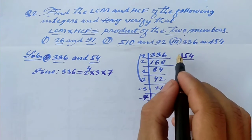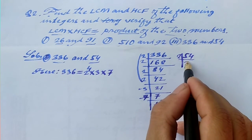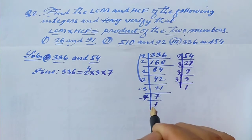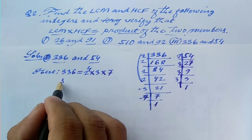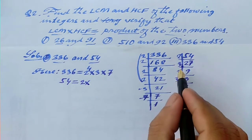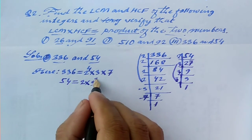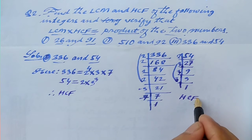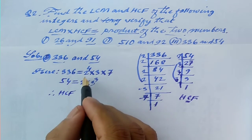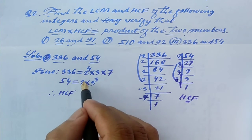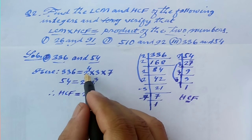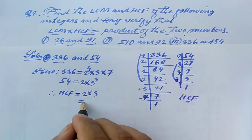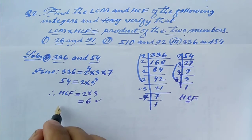Now HCF: the common factors are 2 (minimum power 1) and 3 (minimum power 1), so HCF equals 2 into 3 equals 6. For LCM, we take the highest powers: 2 to the power 4 into 3 cubed into 7.